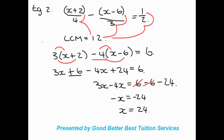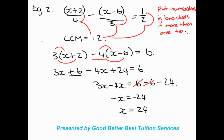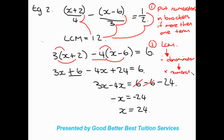That was an example with two terms as the numerator. Very important: the first step is always to put numerators in brackets if there is more than one term. The second step is always to find your LCM. Then divide the LCM by the denominator, times the result by the numerator, and from there solve for x.